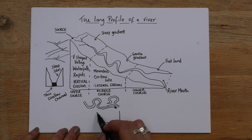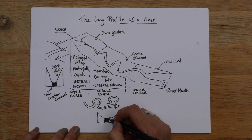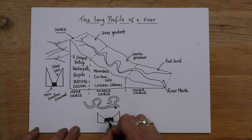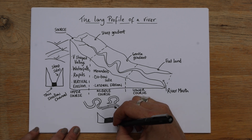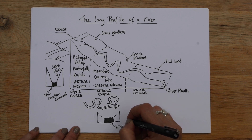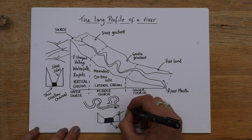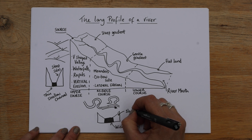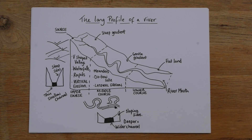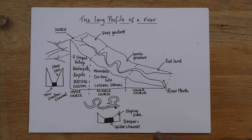Let's do the cross-section for the middle course as well. Notice I've made it a little bit wider this time because there's a more gentle slope — the channel itself is wider and deeper. So we want to say: a wider and deeper channel, and more sloping sides. That's the middle course as a complete overview.